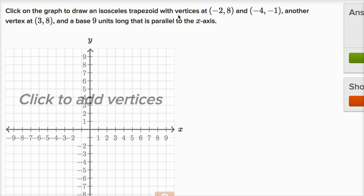Click on the graph to draw an isosceles trapezoid with vertices at negative two comma eight and negative four comma negative one, another vertex at three comma eight, and a base nine units long that is parallel to the x-axis.